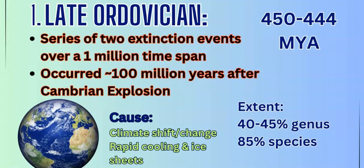Our first mass extinction is the late Ordovician, which happened around 450 to 444 million years ago and occurred in two distinct events. This was the first extinction event and it was a large one, happening about 100 million years after the Cambrian explosion — after the Earth had filled its oceans with new species and 100 million years of evolution and diversity. It came through a climate shift, rapid cooling, and the growth of ice sheets, killing off about 40–45% of the genus, of which about 85% of the species went extinct.